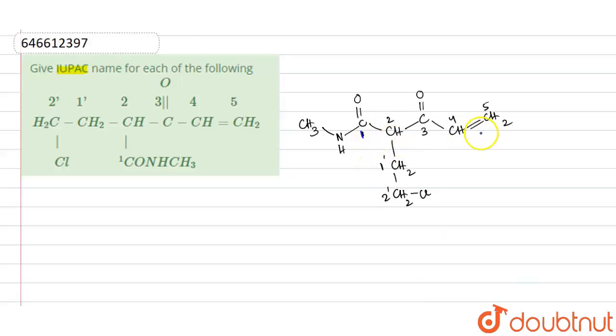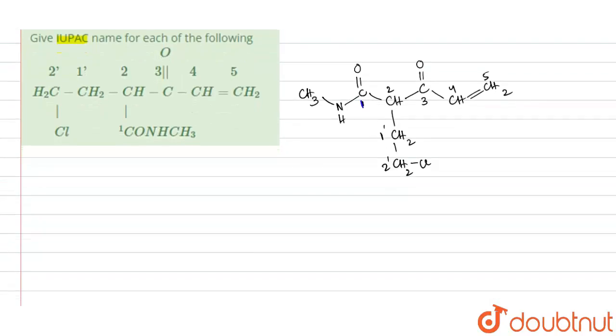So here the word root will be pent. And since this contains one double bond at four position, so this will be pent-4-en. And further, this contains an amide functional group over here, so this is CH3-NHCO. So here we drop the E of the EN and we simply put EN. Then at one we have amide.